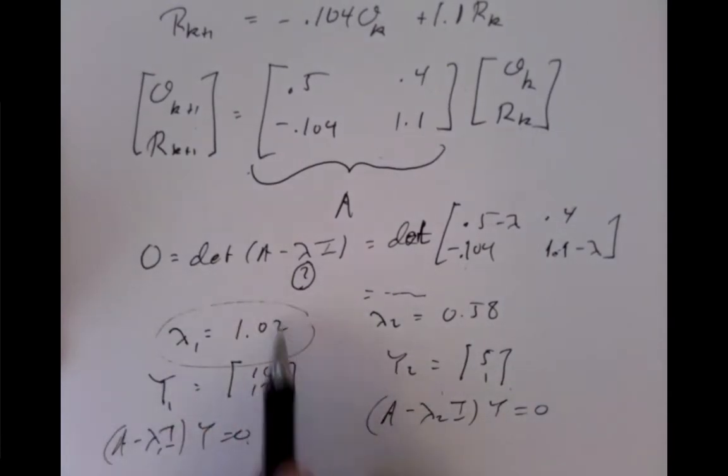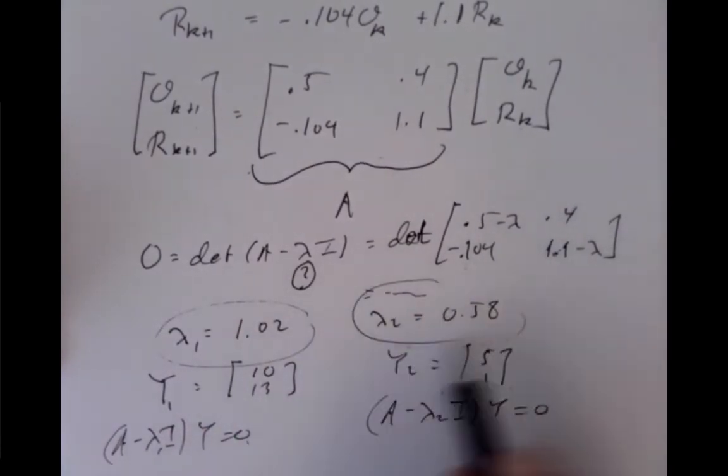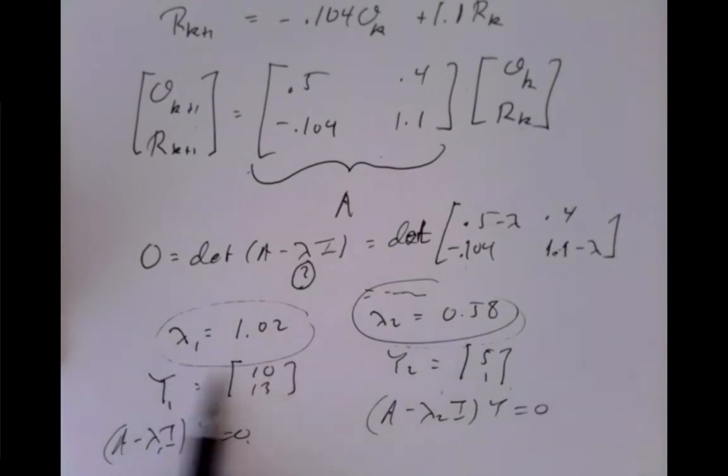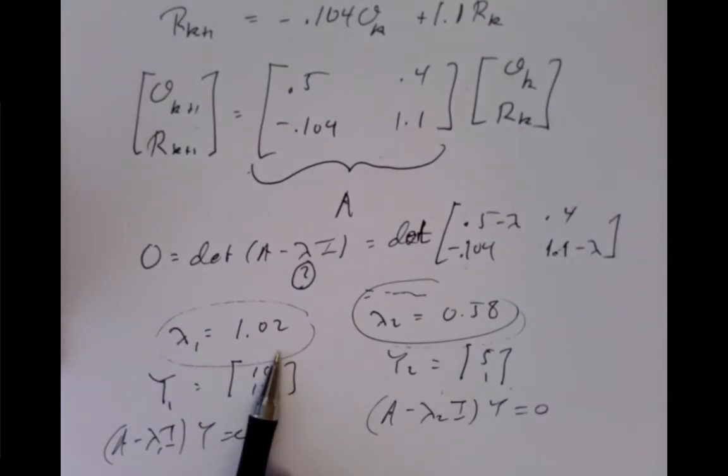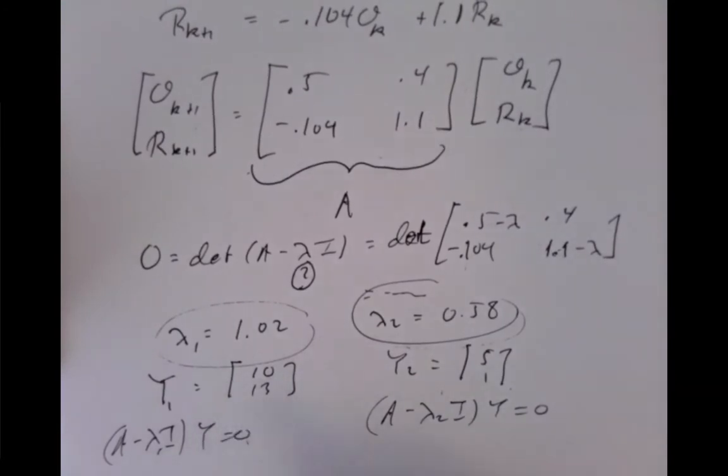So what does it tell us though about the long-term dynamics? Well, there are two eigenvalues. One is close to 1, which means the population stays close to being always the same. At that particular population, 10 owls, 13 rats.